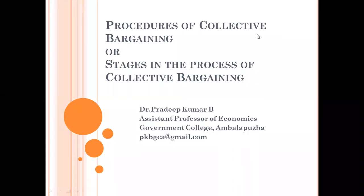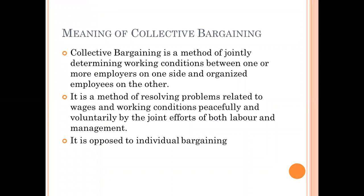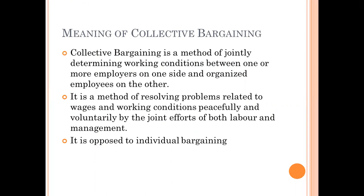In this class, we will discuss procedures of collective bargaining or stages in the process of collective bargaining. First, we will discuss the meaning of collective bargaining. Collective bargaining is a method of jointly determining working conditions between one or more employers on one side and organized employees on the other. It is a method of solving problems related to wages and working conditions peacefully and voluntarily by the joint efforts of both labor and management. It is opposed to individual bargaining.